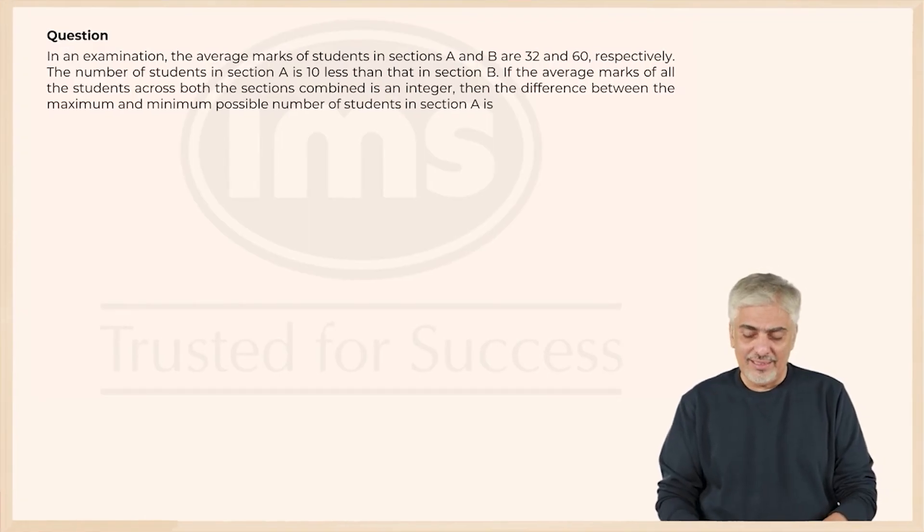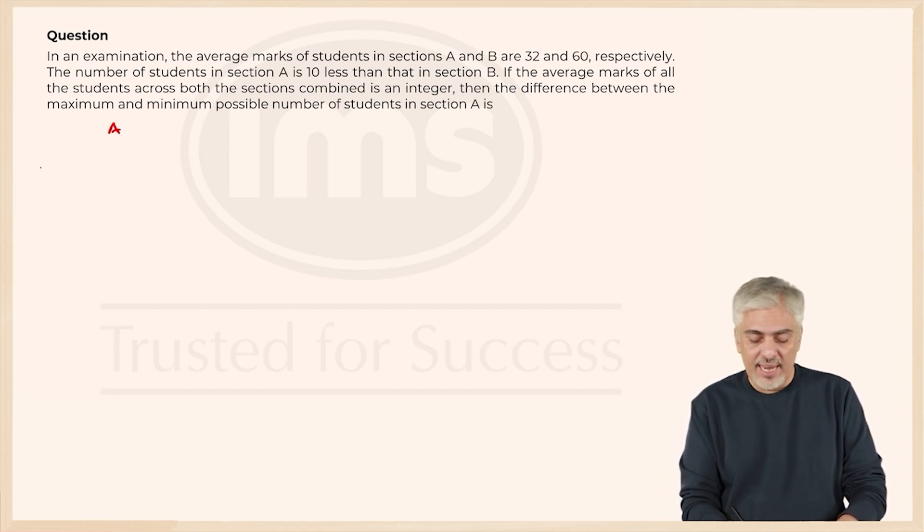Let us have a look at the next question. In an examination, the average mark of students in section A was 32, while section B the average was 60.